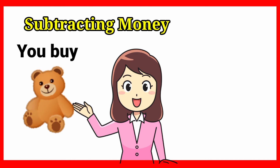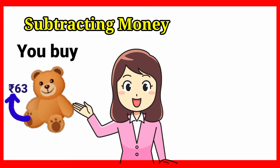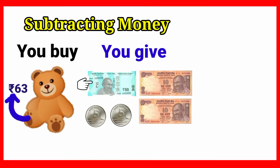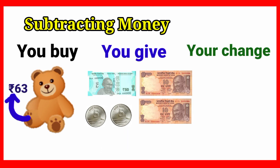Children, look at this image. The Teddy Bear has a cost. The path shows 63 rupees. You buy it. You come here and you give: 50 rupees, then 10 rupees, then another 10 rupees, then 5 rupees coins, then another 5 rupees coins. So totally 80 rupees.